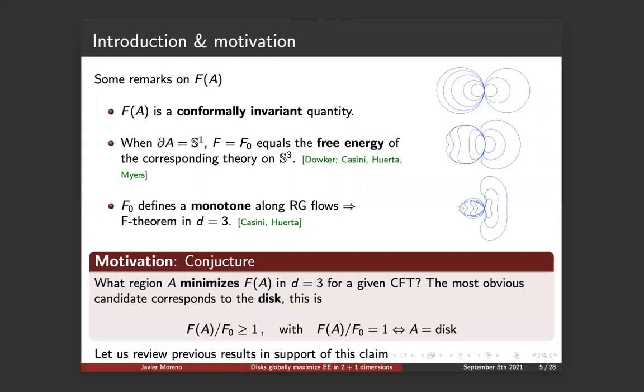Some remarks on this finite piece is that it's conformally invariant. For instance, whenever you're going to consider regions, if they undergo conformal transformation they will share the same f. For instance, all of these figures in the right should be isentropic from the point of view of their universal contributions. Moreover, when the entangling surface is a disk, then f equals F0, the free energy of the corresponding theory when it's placed on S3. And interestingly, this F0 defines a monotone along RG flows, so this has been exploited to define an f theorem in three-dimensional CFTs.